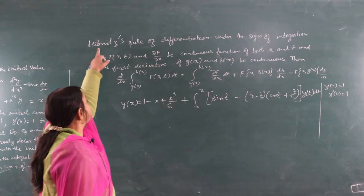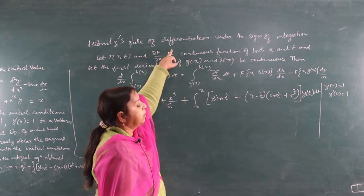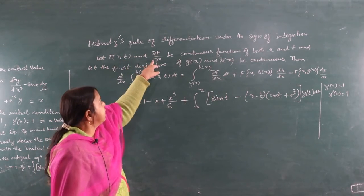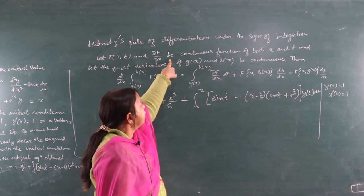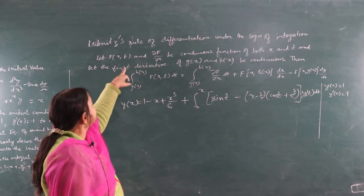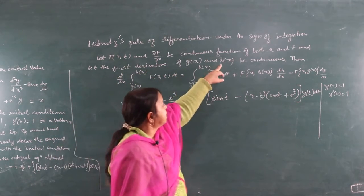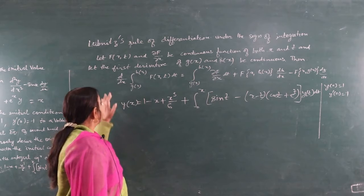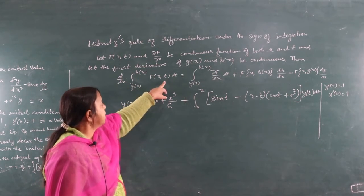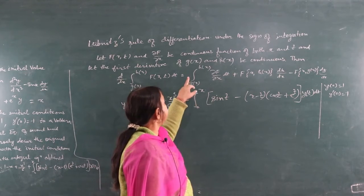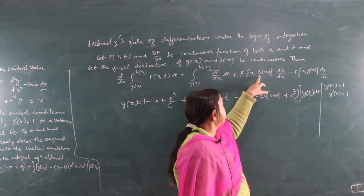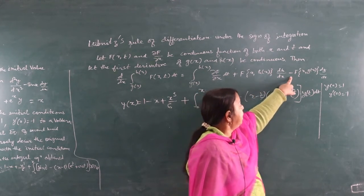Now, this uses the Leibniz rule of differentiation under the sign of integration. Let f(x, t) and ∂f/∂x be continuous functions of both x and t, and let the first derivatives of g(x) and h(x) be continuous. Then d/dx of ∫_{g(x)}^{h(x)} f(x,t) dt = ∫_{g(x)}^{h(x)} ∂f/∂x dt + f(x, h(x))·h'(x) - f(x, g(x))·g'(x).